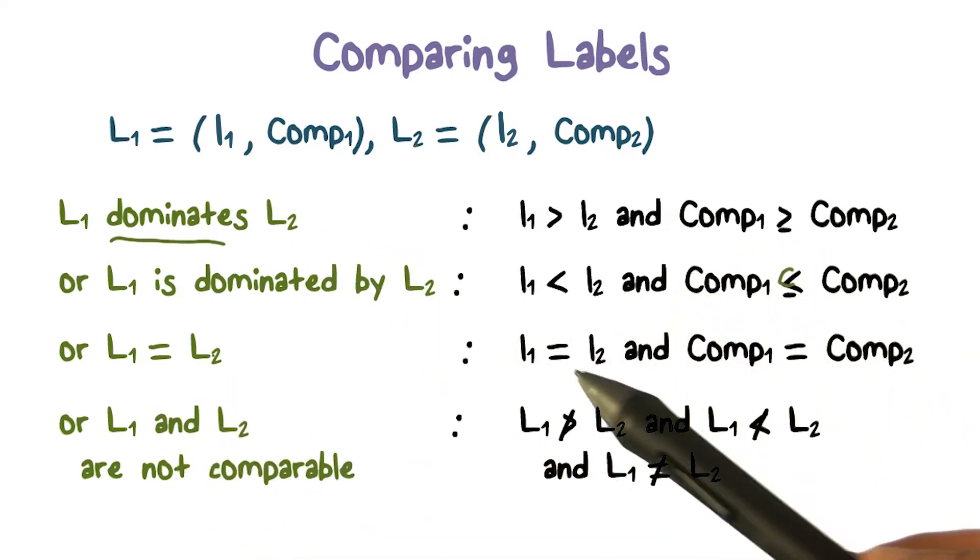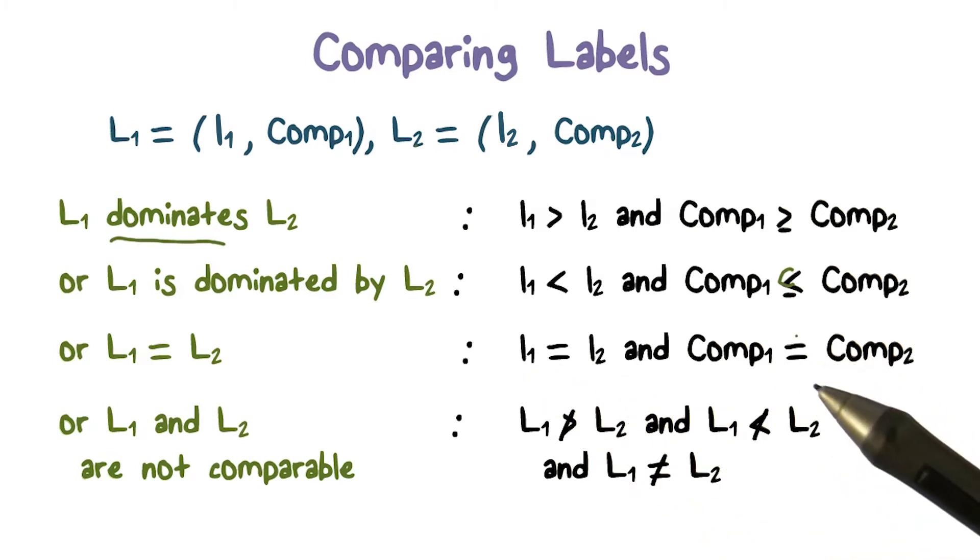For the two labels to be equal, of course, each part has to be the same. So the levels have to be the same, and the compartments have to be the same.